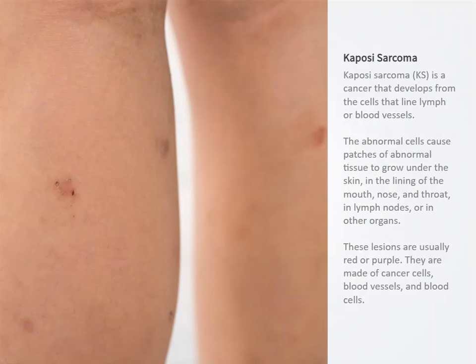Kaposi's sarcoma is a malignancy of the endothelial cells that line small blood vessels. Kaposi's sarcoma generally begins as an ecchymotic-like macule that evolves into papules, plaques, nodules, and tumors.